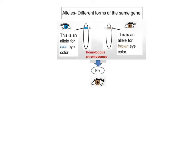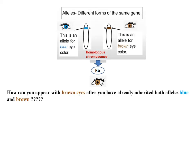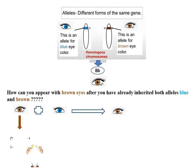Now, an important question. How can you appear with brown eyes after you have already inherited both alleles, blue and brown? If you inherited the brown allele from your dad, and if you inherited the blue alleles from your mom, why do you have brown eyes?